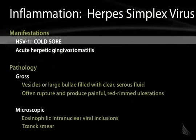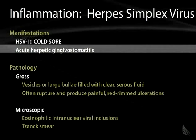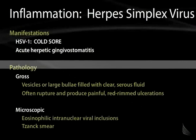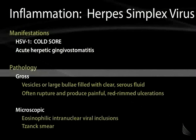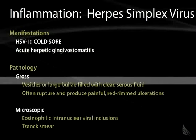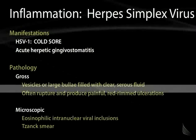It can also lead in other individuals to an acute herpetic gingivostomatitis. The pathology one examines in a cold sore is grossly vesicles — large blisters filled with a clear serous fluid — which will rupture and produce painful red-rimmed ulcerations.